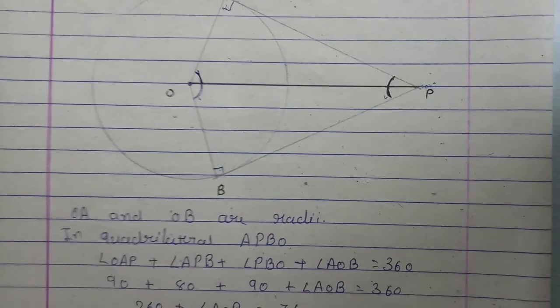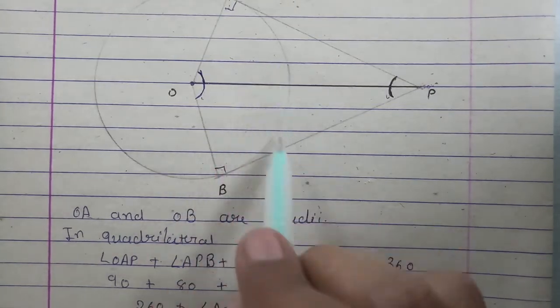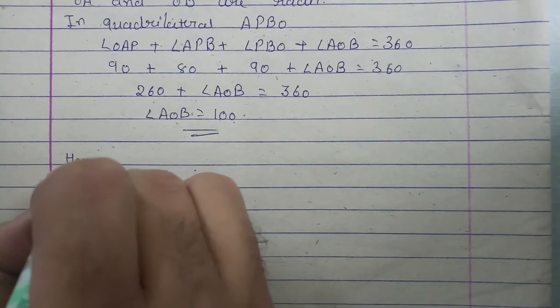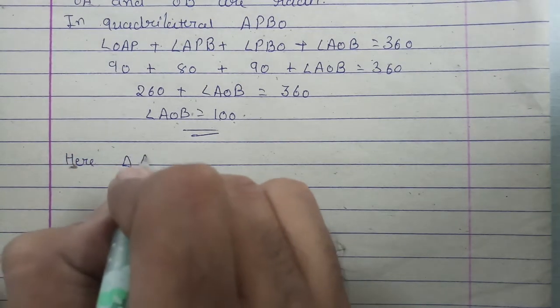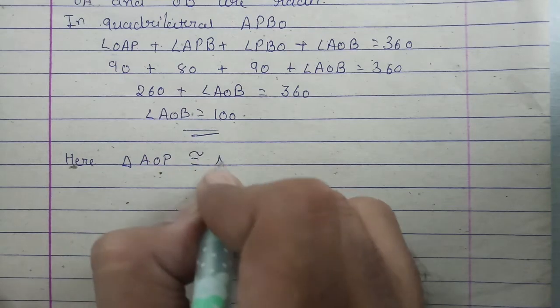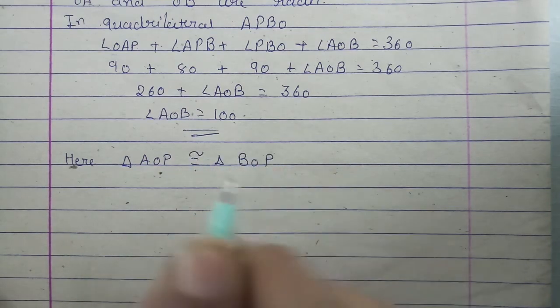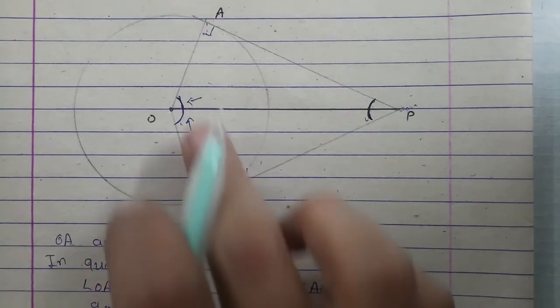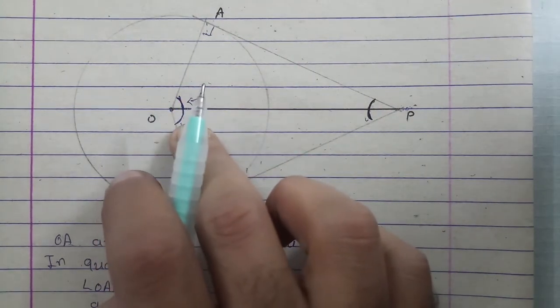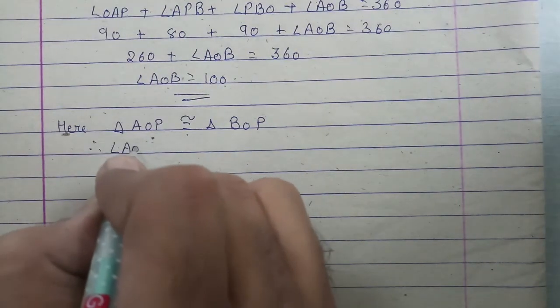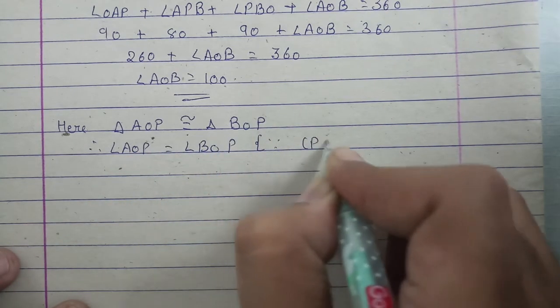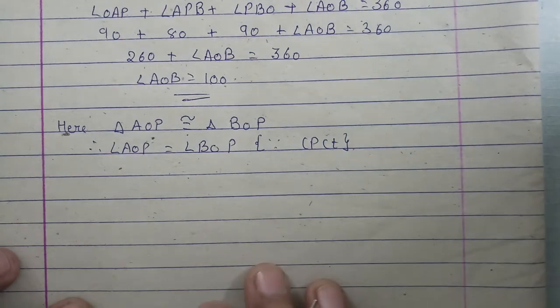Now in theorem 10.1 we learned that these two triangles are congruent triangles. So here triangle AOP is congruent to triangle BOP. This means that in these two triangles, angle AOP and angle BOP, these two angles are equal because they are corresponding parts of congruent triangles. Therefore angle AOP is equal to angle BOP. Reason is CPCT, corresponding parts of congruent triangles.